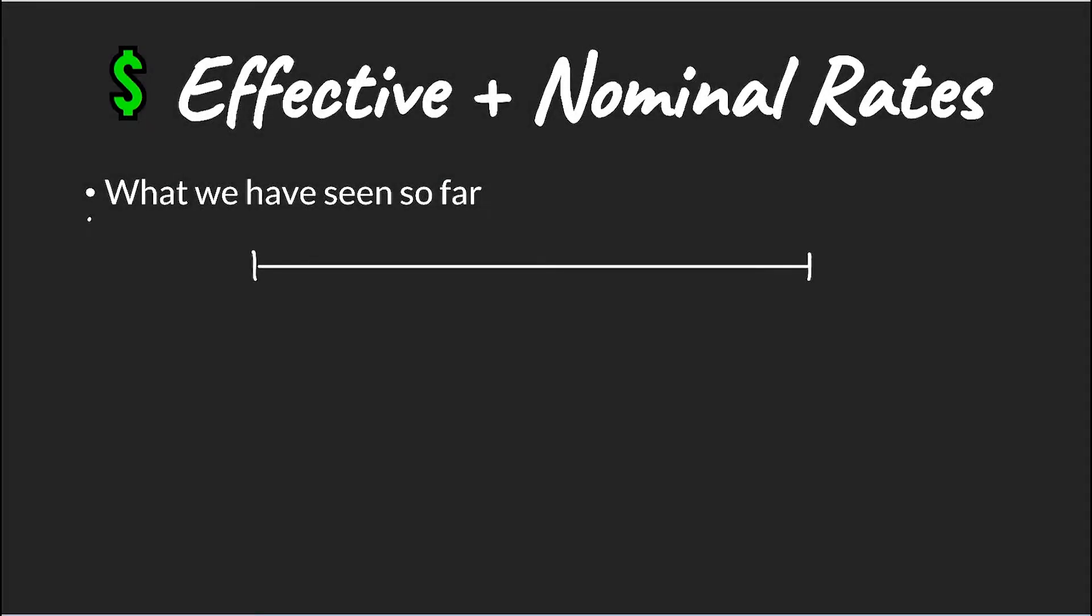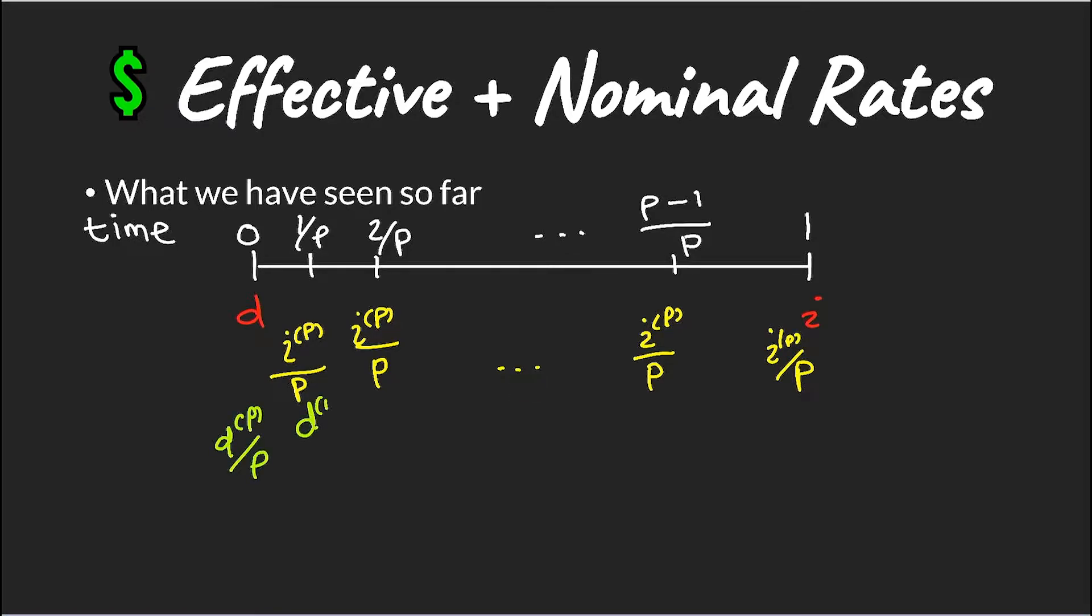So far we have seen how interest payments can be made at discrete time points. For example, at the end of a period, I, the effective interest is paid, and at the beginning of the period, D, the discount rate is paid. If we take our time period and then split it up into P intervals, we can then show how our effective rates for those smaller periods are paid.